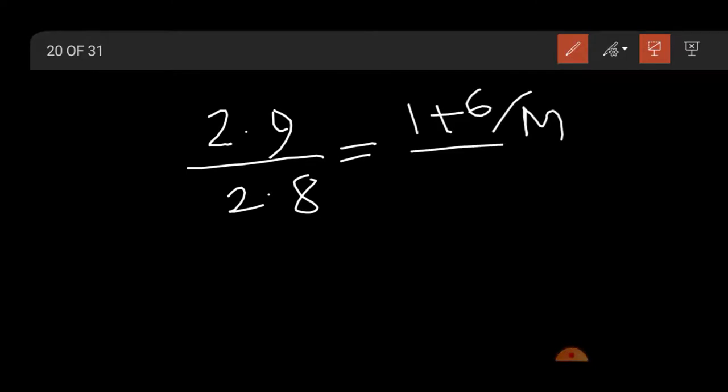Now, two equations. 2.9 divided by 2.8 is equal to 1 plus 6 by m divided by 1 plus 5 by m. So from here m equal to 23 gram per mol.